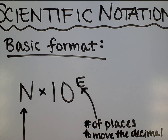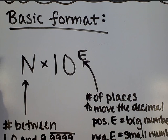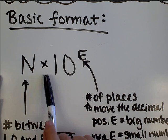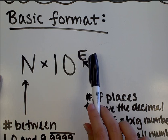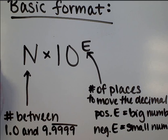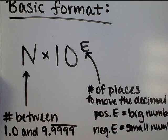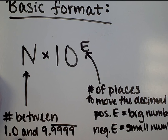The basic format of scientific notation is that we've got some number and it gets multiplied by 10 to some exponent, to some power. Now the general rules are this number out in front needs to be between 1.0 and 9.99 whatever. The key idea is there can only be one digit before the decimal point. No 0.9s, no 10.0, one digit before that decimal point. So that's the number out in front.